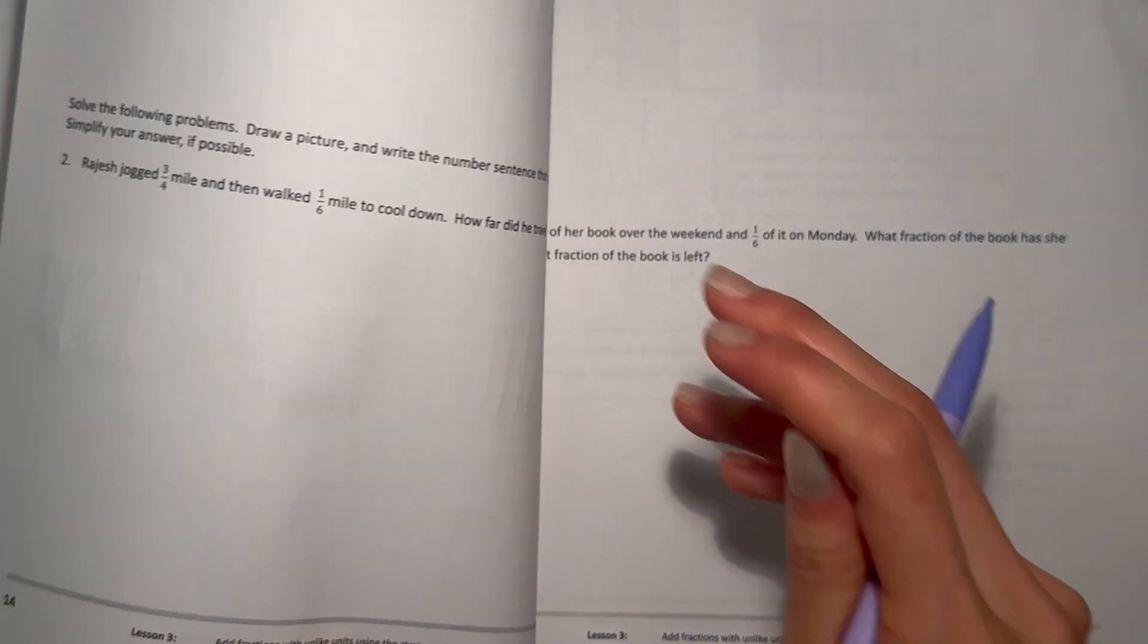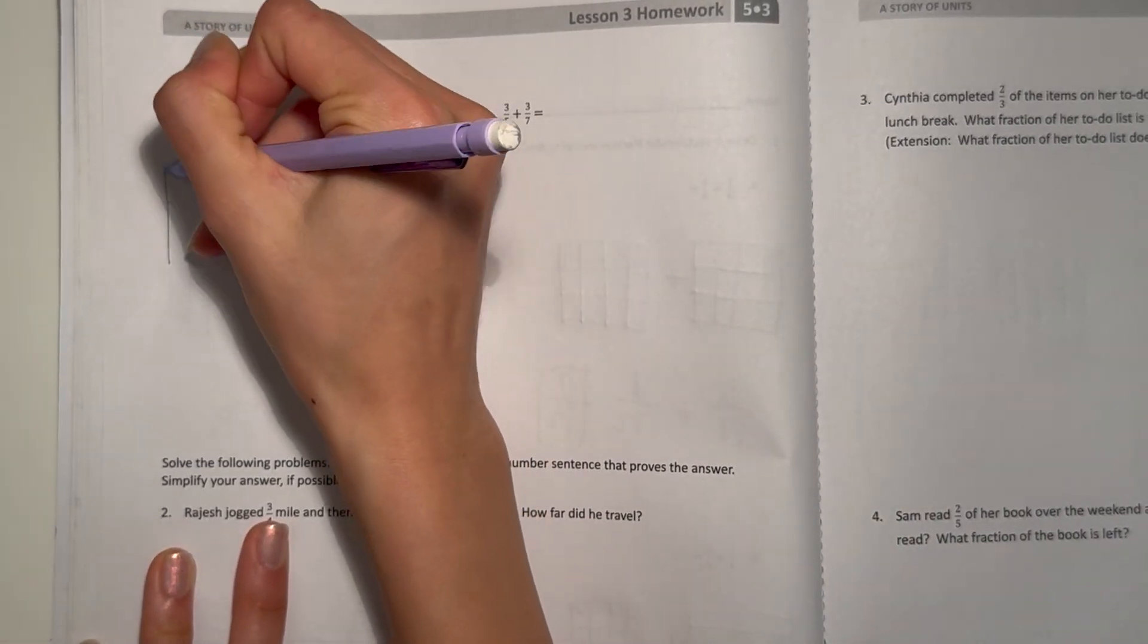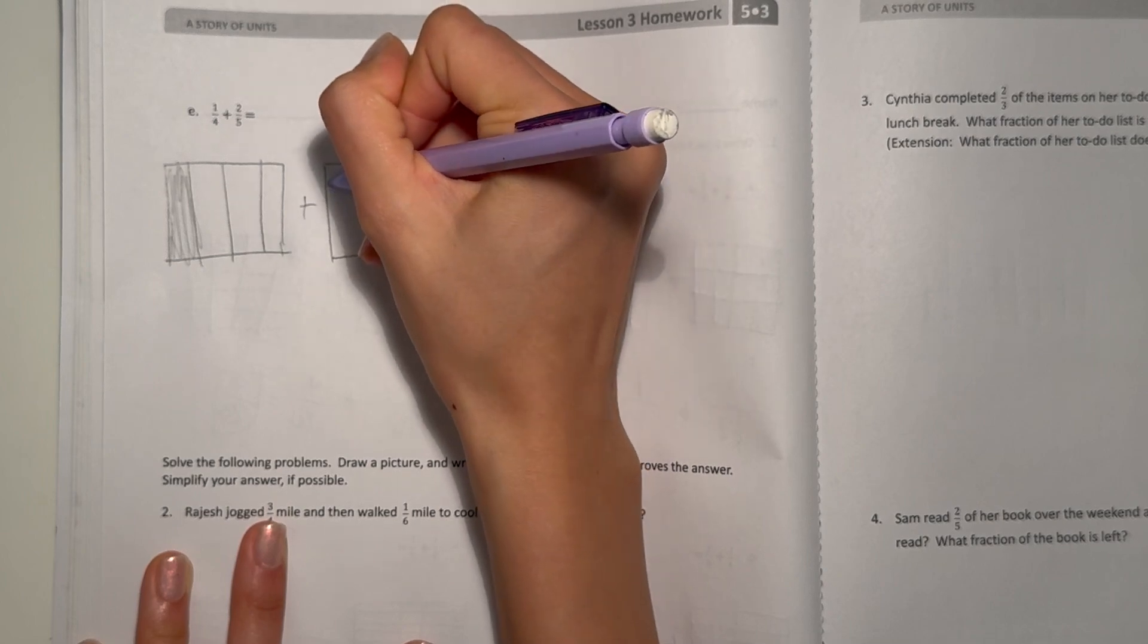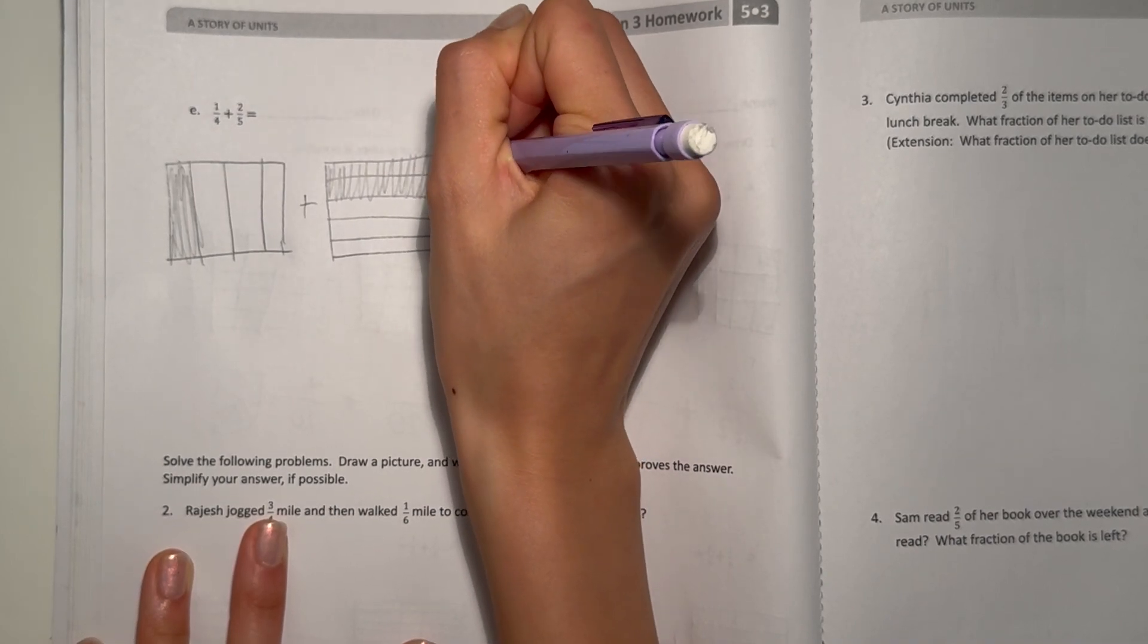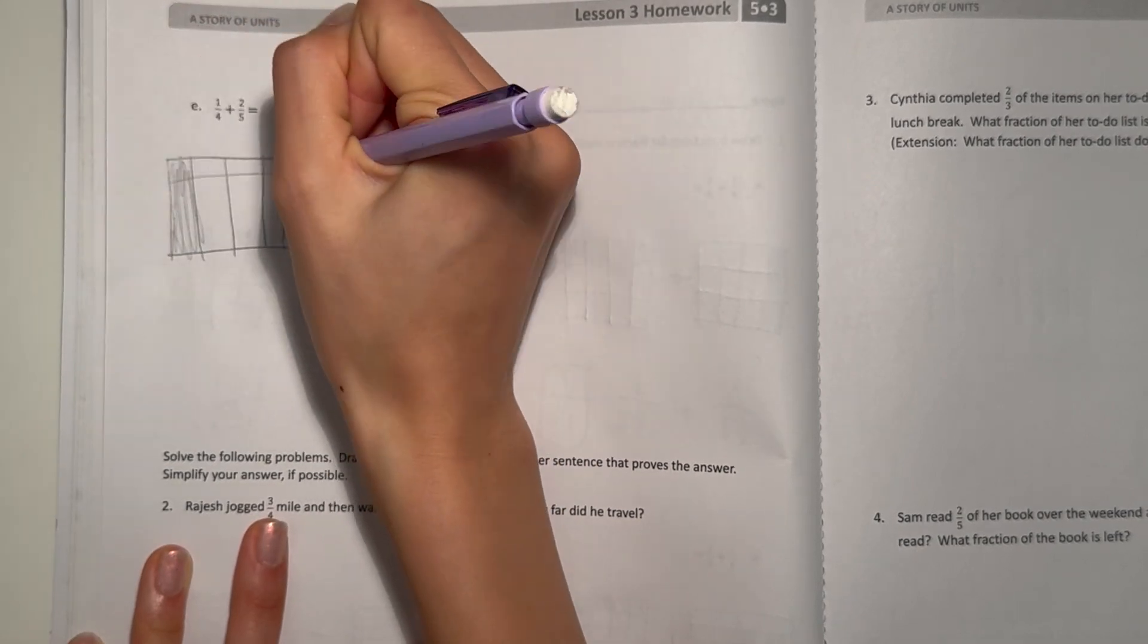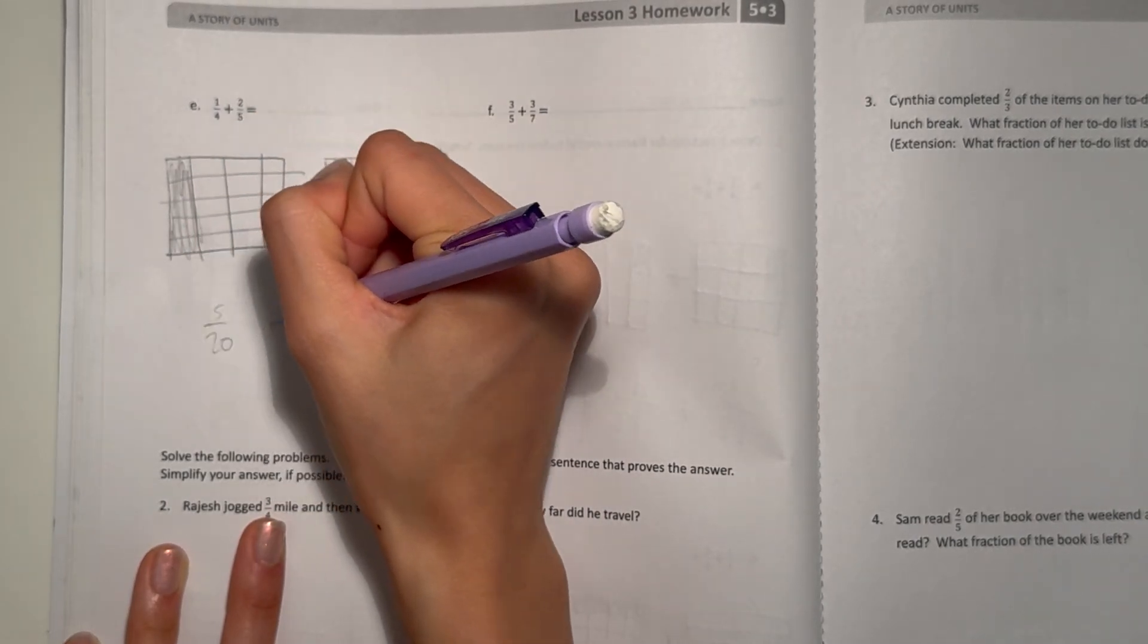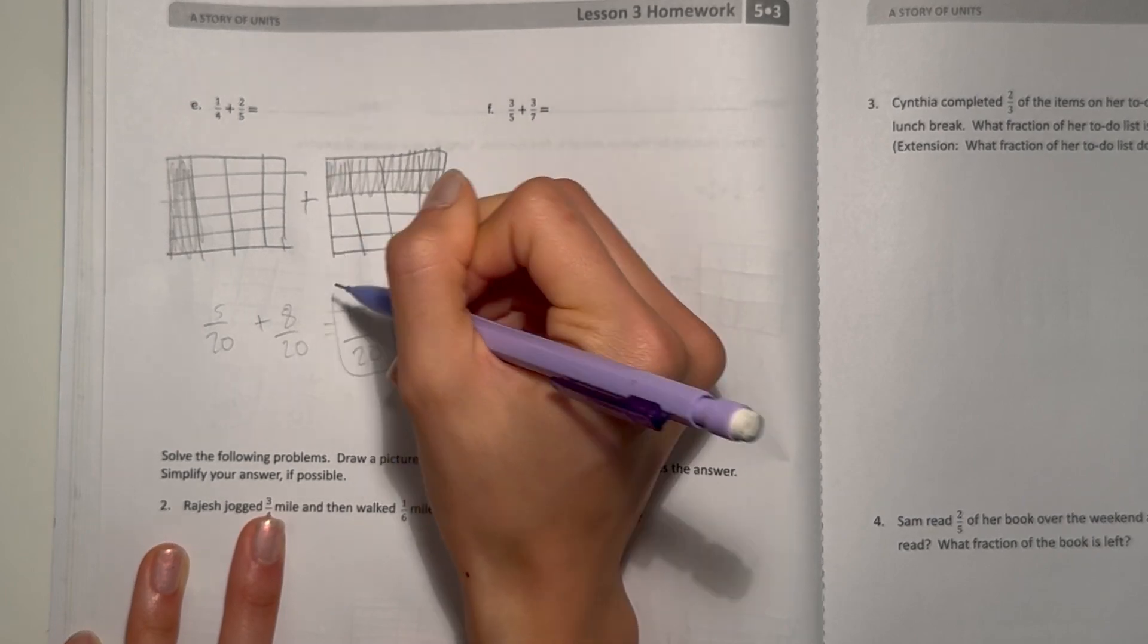Alright next page E, one-fourth plus two-fifths. Alright let's see, the fourth plus two-fifths. Let's split this into fifths, split it and shade in two. So it's, draw more boxes basically, so this part divided into fifths, this part divided into fourths. So now we have five, five, five, twenty plus eight out of twenty which will give us thirteen over twenty.